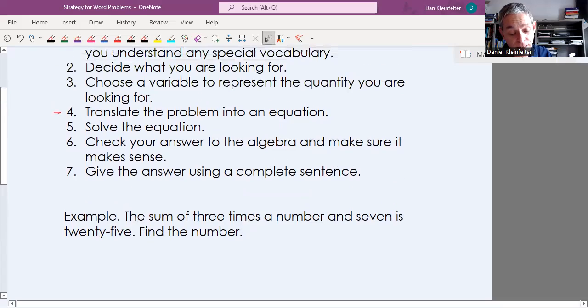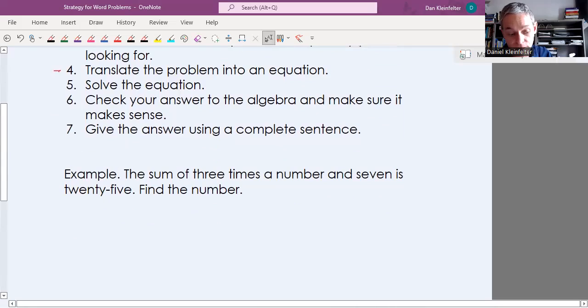So the next step is to choose a variable to represent the quantity we're looking for. Here it's just a number. So I'm going to let N be the number. And then at this point, we want to turn this into an equation. The sum of three times a number and seven. Sum means addition. Three times, times is multiplication. Sum of three times a number and seven is. That's going to be where our equal sign is. And that's equal to 25. So the sum of, that's an addition, three times a number and seven is. That's equals 25. Okay. So there's the formation of our equation.